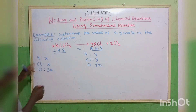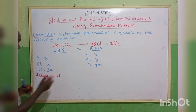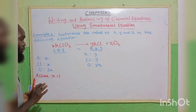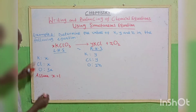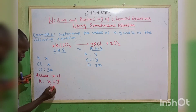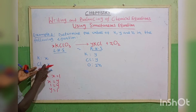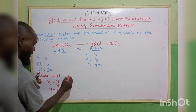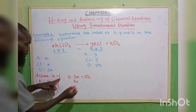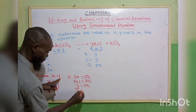Let us now compare. Assume the first letter to be unity: x equals 1. For potassium, x equals y, so since x is 1, y equals 1. We don't need to check chlorine since both give x and y and we've found them. For oxygen: 3x equals 2z. So 3 times 1 equals 2z, giving 3 equals 2z. Divide both sides by 2: z equals 3 over 2.